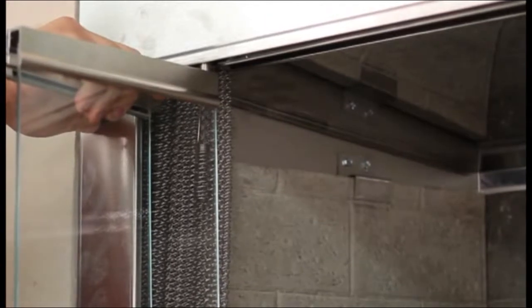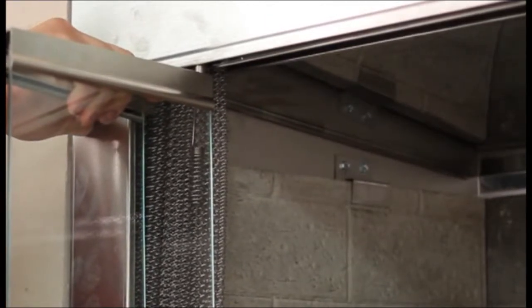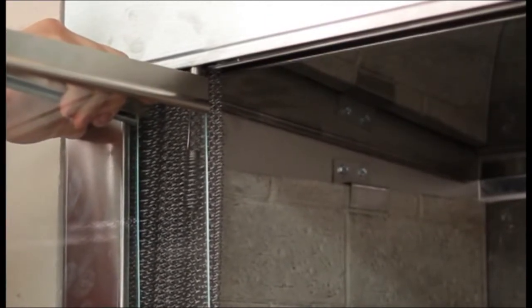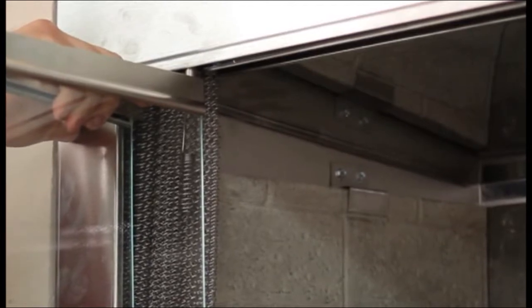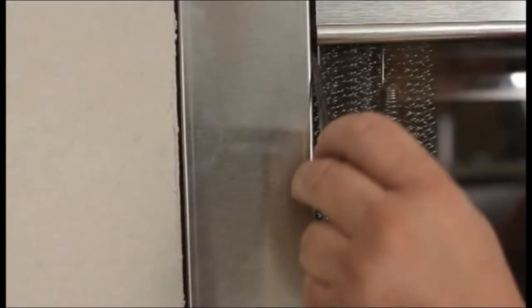Slide the upper door pivot pins into the track, sliding the door to its vertical position until the door pin snaps into the spring clip. Repeat for the other door. It may be necessary to adjust and align the doors.